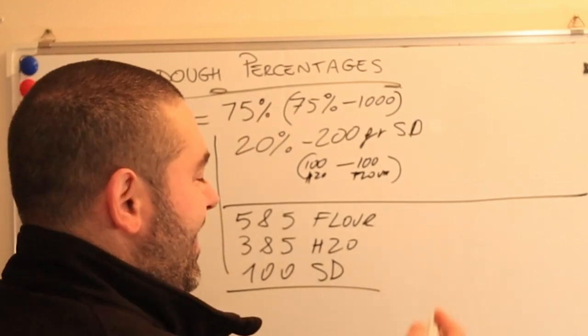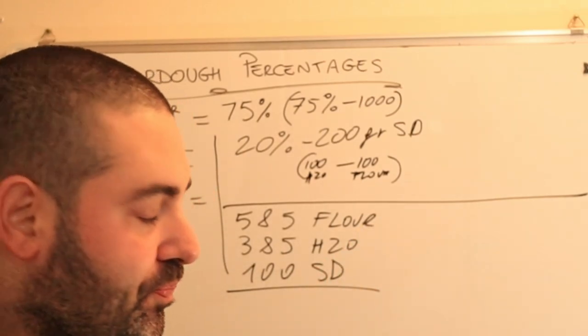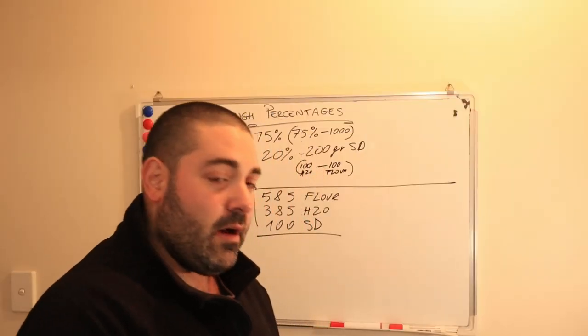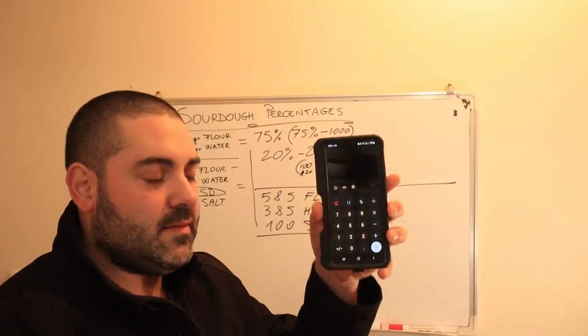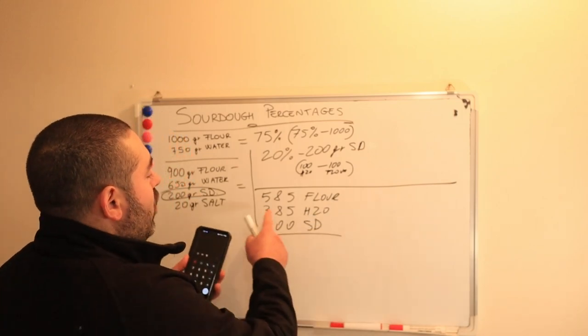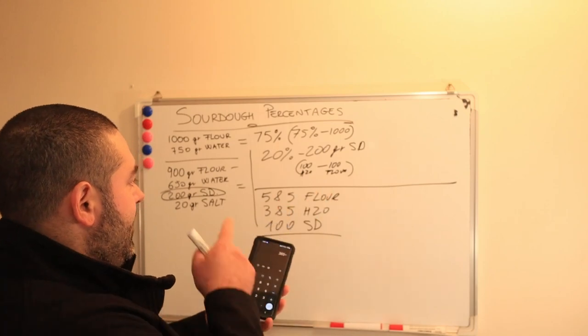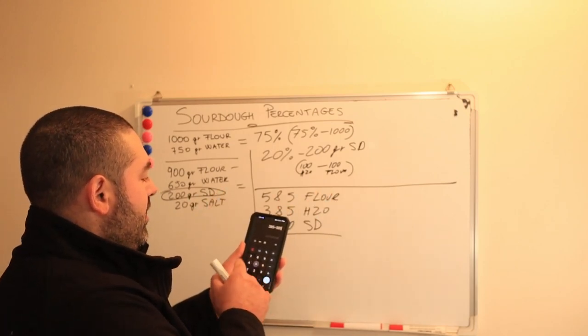Now, of course, with the aid of a calculator, we'll find this answer here. So now I have the calculator here. I'm gonna type the amount of water first, 385, divided by the amount of flour, 585.